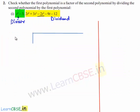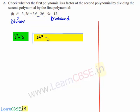The divisor, which is t² minus 3, can be written here, and the dividend, which is 2t⁴ plus 3t³ minus 2t² minus 9t minus 12, can be written here.